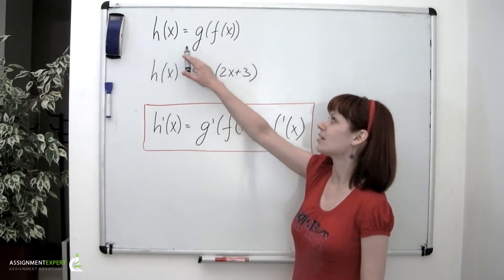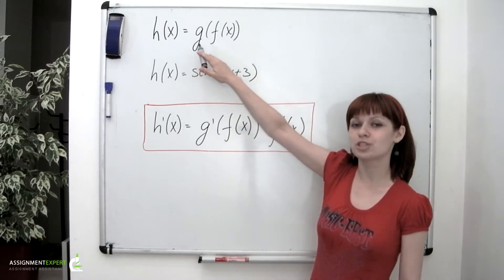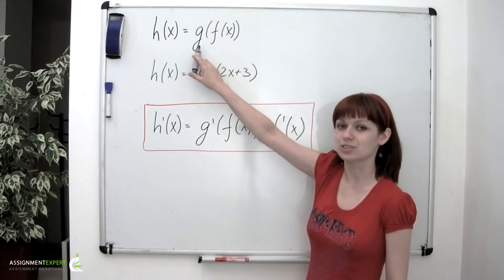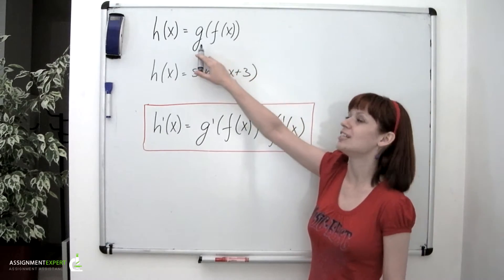Here we have h(x) equal to g of f of x. h(x) is a composition of two functions g and f. f of x is, so to say, enclosed into the g function. And it may be said that f of x is the inside function and g is the outside function.